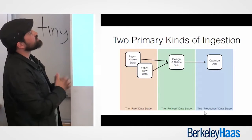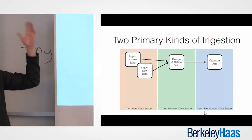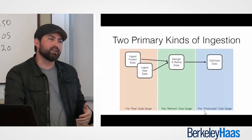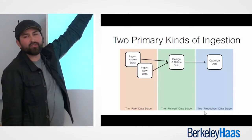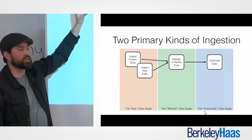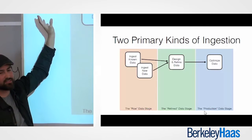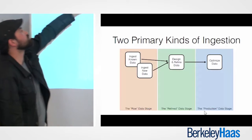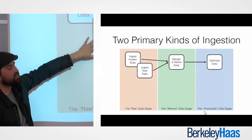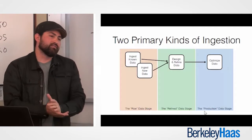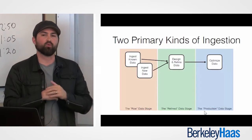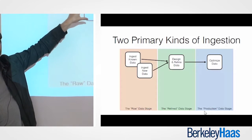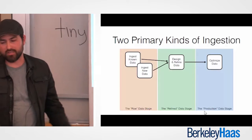We talk about two different kinds of ingestion. There's ingesting known data — data people have been using for decades, tied up in mainframes, enterprise warehouses, SQL databases. That data is pretty well known, already used by the organization. A lot of what's going on in the raw stage for that data is literally just copying it over. Then there's ingesting new data, where you see some really wonky stuff. For example, sales organizations trying to drive forecasting using weather data or social media data — ingesting a Twitter feed that no one in the organization has ever worked with, figuring out how to stitch it into their normal data and build a pipeline to see ROI.